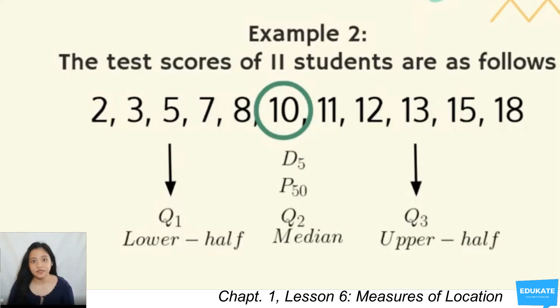Since 10 is the median, we can also say that it is quartile 2, Q2, decile 5, D5, and percentile 50, or P50. And then you have there your quartile 1, Q1, which is 5, the median of the lower half, and then your quartile 3, Q3, 13, the median of the upper half.